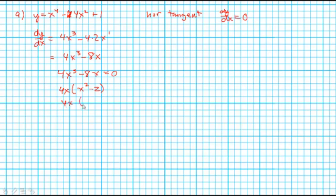And so that means 4x and then if I can factor this which I can it ends up being x minus the square root of 2 and x plus the square root of 2 is equal to 0. So it looks like there's going to be horizontal tangents at x equals 0 and x equals plus or minus the square root of 2.